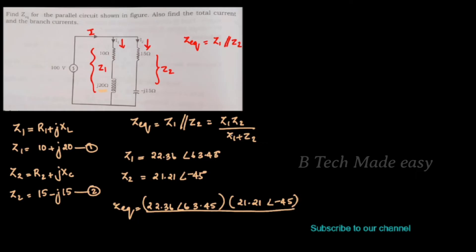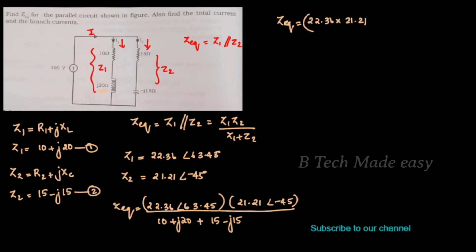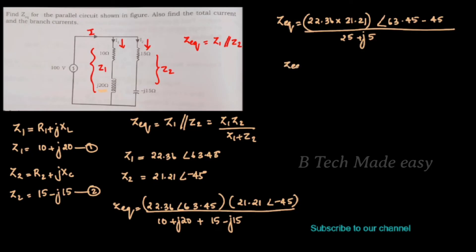For the denominator, we use the rectangular form. Z1 plus Z2 is 10 plus 15 equals 25 for the real part, and the imaginary part gives 25 plus J5. The magnitude of the numerator is 22.36 into 21.21 equals 474.25, and the angle is 63.45 minus 45 equals 18.45 degrees.